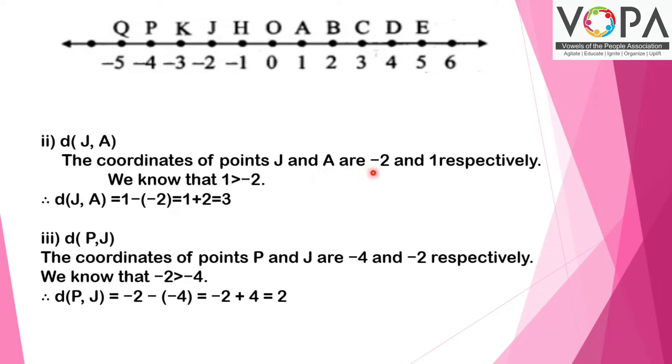Distance of J, A: The coordinates of point J and A are -2 and 1 respectively. We know that 1 is greater than -2. You can see here J is -2 and A is 1, so the distance between them is - when you count on the number line, 1, 2, 3. So when we do it this way, as 1 is greater than -2: 1 minus (-2) equals 1 plus 2, which is equal to 3.